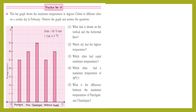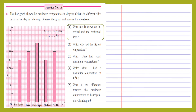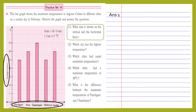Question number 1: What data is shown on the vertical and horizontal lines? As you can see, the vertical line on the graph paper shows temperature, and the horizontal line shows different cities — Panchgani, Pune, Chandrapur, Matheran, and Nasik. So we can write: vertical lines show temperature and horizontal lines show different cities.